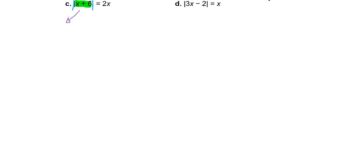And so we know that we're going to be splitting this into two problems. So we're going to take our x plus 6 and set it equal to 2x. And then we're going to take our x plus 6 and set that equal to negative 2x.